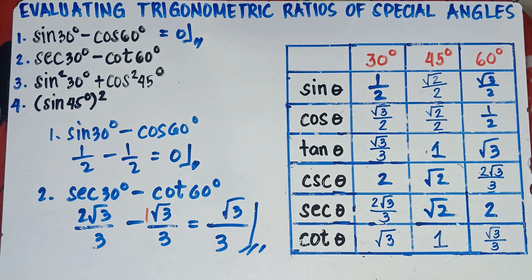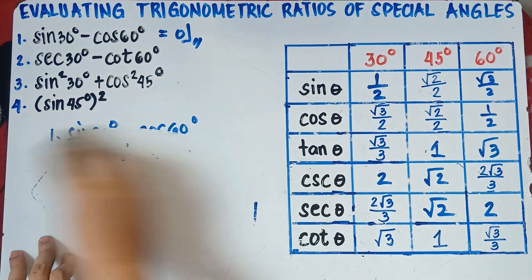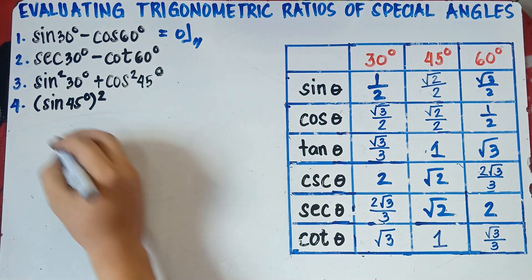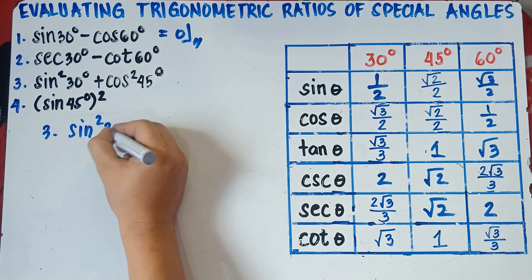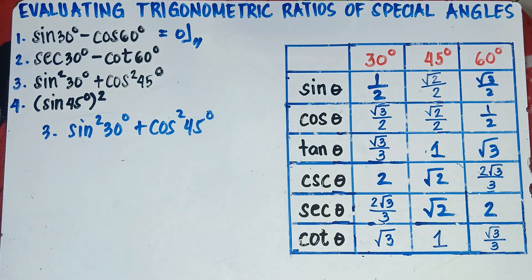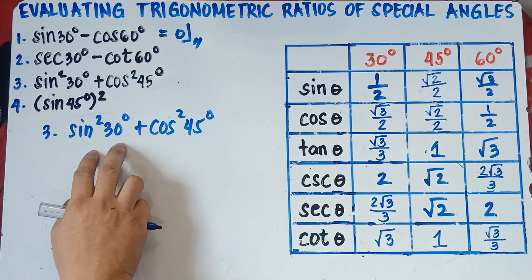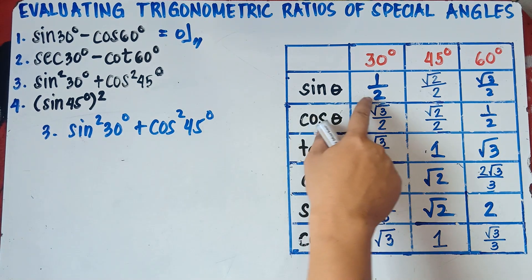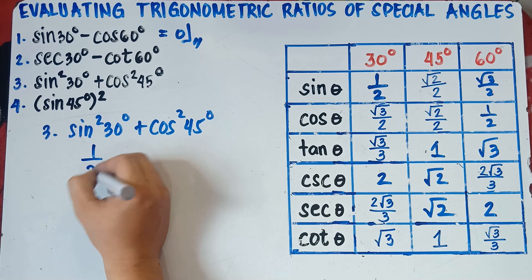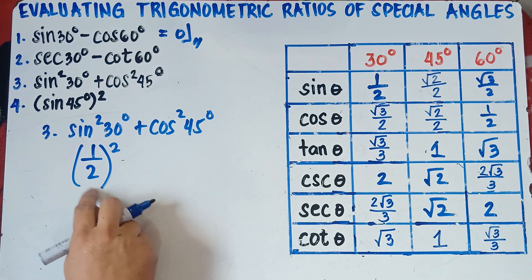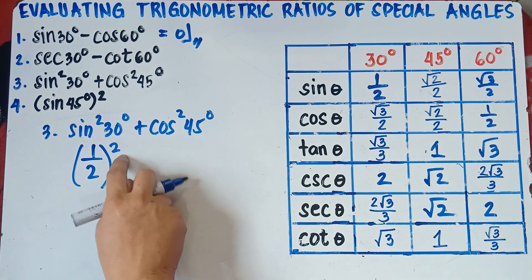Let's try number 3: sine squared 30 degrees plus cosine squared 45 degrees. If you have sine squared 30 degrees, it means you multiply the value of sine 30 degrees by itself twice. Sine 30 degrees is 1/2, and since it says square, we need to square 1/2. The meaning of square is not multiplying by 2 — for example, 3 squared is 3 times 3, which is 9.